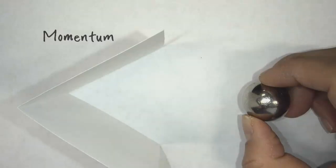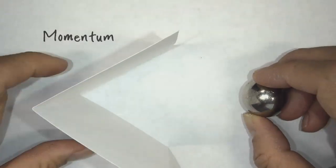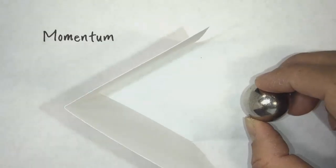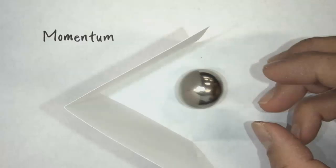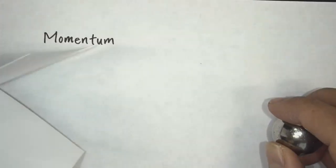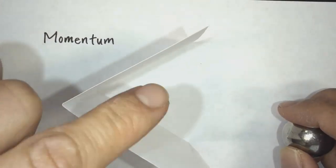In this video, we're going to talk about the concept of momentum. One way to think about momentum is to think about how hard it is to stop an object. So here I have a steel ball. I'm going to roll it. You can see that it pushes this little note card quite far.